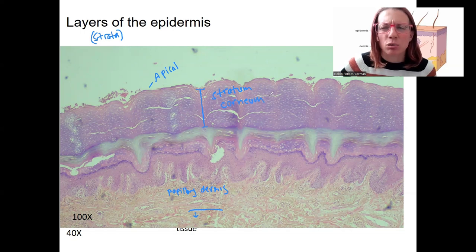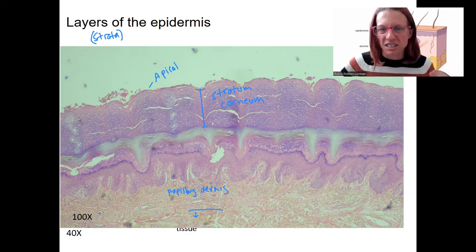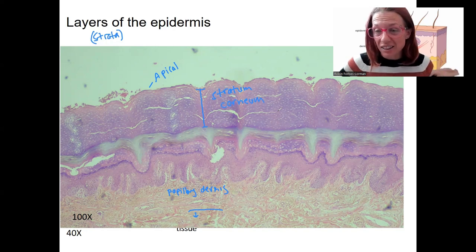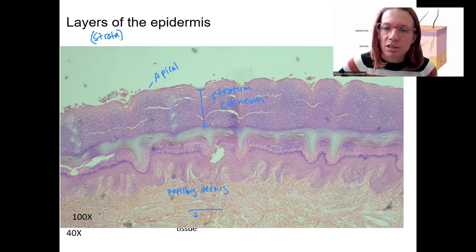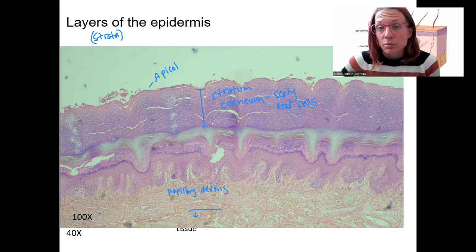Stratum corneum — I remember this because of "corona," which is crown in Spanish. Corneum actually refers to the horny layer. These are dead cells that are kind of scaly — in some species like reptiles, even more scaly — at the top layer of the epidermis. We'll call them scaly dead cells. Even though they're dead, they're still playing an important role in protecting.